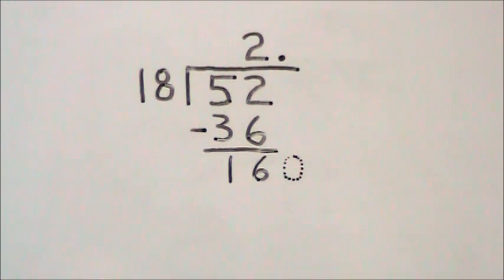However, if we need an answer with decimals, then we have to carry out our number even further and add a zero to the end of 16 to make it 160 so that our divisor, 18, can go into it. We also put our decimal right to the right of the 2.